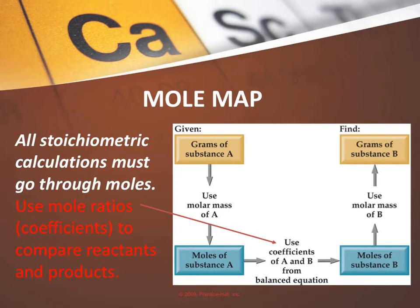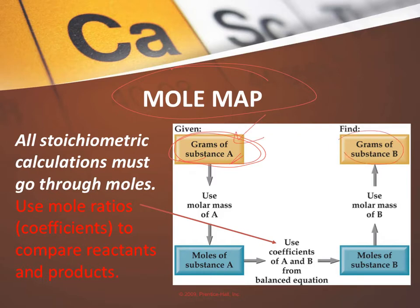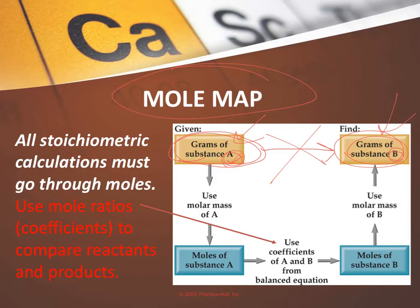There's something called a mole map that helps quite a few students. Let's say we start with grams of a particular reactant A, and the question asks how many grams of product B can you make. You cannot go from grams of one substance to grams of a different substance. You can't compare mass of one thing to mass of something else. The only way to compare two different materials is to use a mole ratio. They both have to be in units of moles before you can compare different substances.